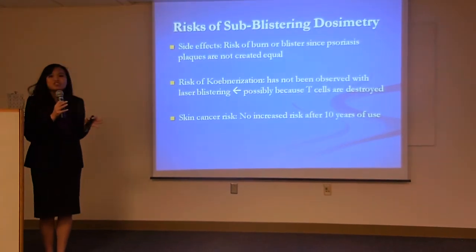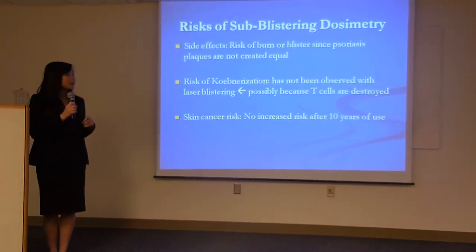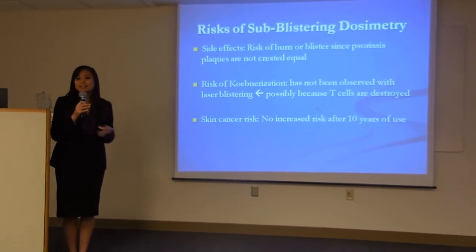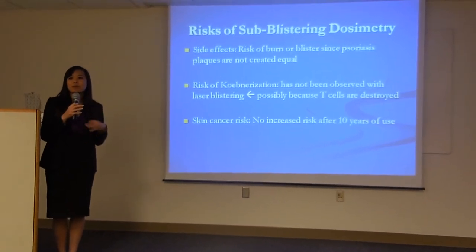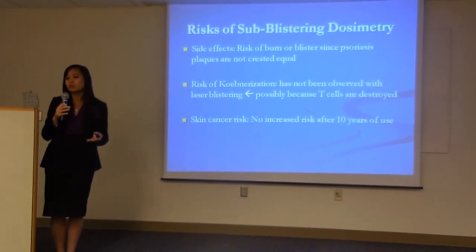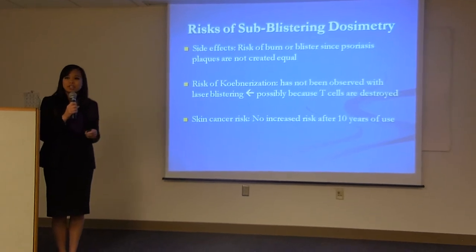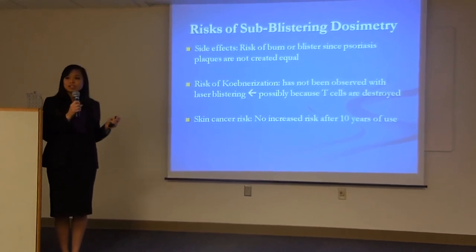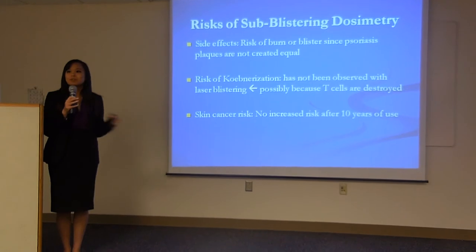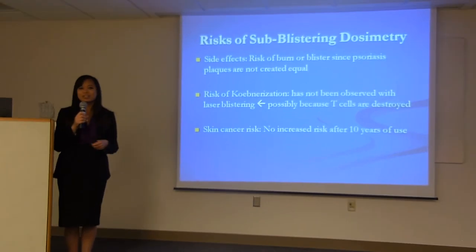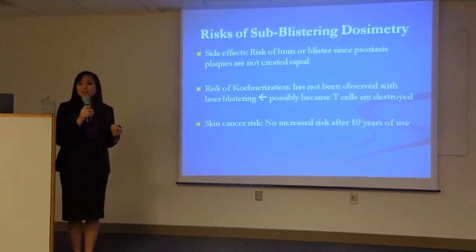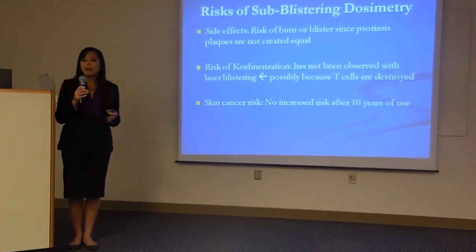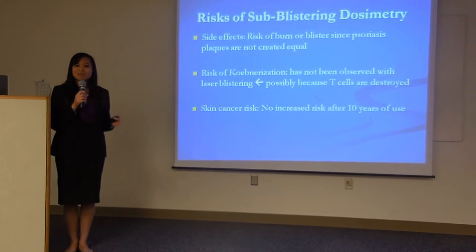So, of course, the sub-blistering dosimetry does come with some risk. So the patients do have a risk of burning or blistering. And this is mainly because not all psoriatic plaques are equal. They do tolerate different amounts of light. So inadvertently, the patient may burn or blister. There is a risk of Koebnerization. However, we have not found this in any of the patients. And a possible explanation could be that the T cells were pretty much wiped out. So then this could prevent the cause of Koebnerization. And then the last is an increased risk of skin cancer. So this is always a risk. However, the laser has been used worldwide for over 10 years. And there's been no documented increased risk of cancer.